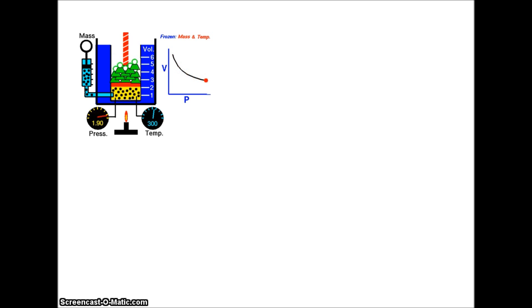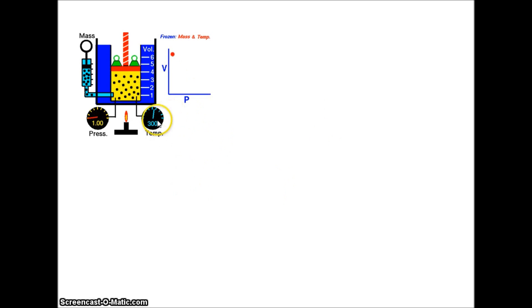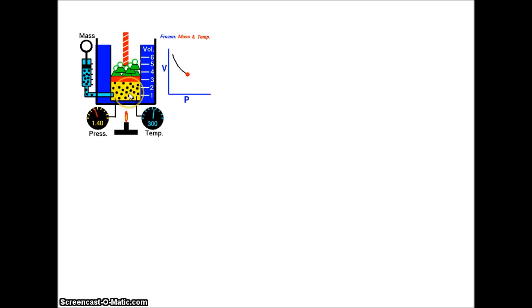There are three things that were discovered earlier on in the science. First, if we have a mass of gas that is constant — the system is the gas — and when the temperature is constant, if we increase the pressure on the gas, that will decrease its volume. So we find out that these are inversely related.